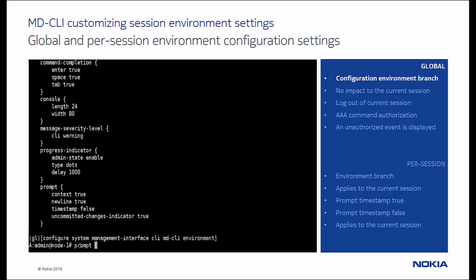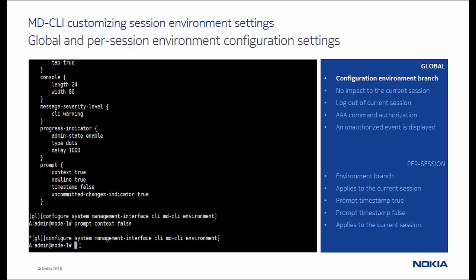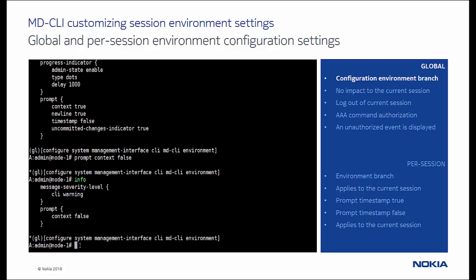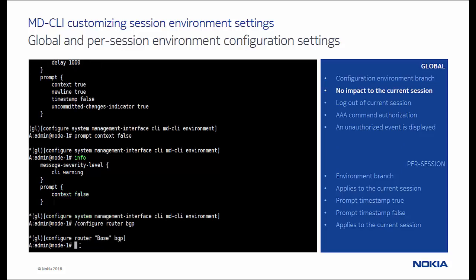In the first example, we set the prompt context parameter to false. We can see that this global configuration change has no impact to the current session, where the context — configure root of BGP — is still displayed.